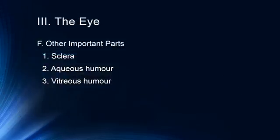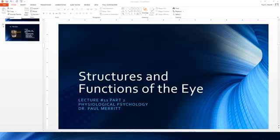The sclera is the outer part of the eye. The aqueous and vitreous humor are the fluids within the eye, and an imbalance of these can result in diseases like glaucoma. We'll talk more about those when we discuss diseases of the eye. That's your introduction to the structures and functions of the eye.